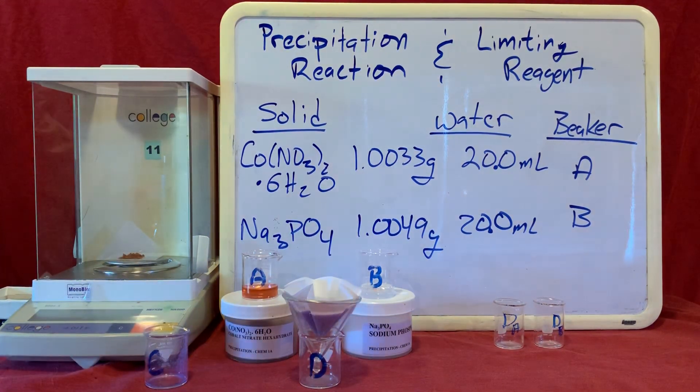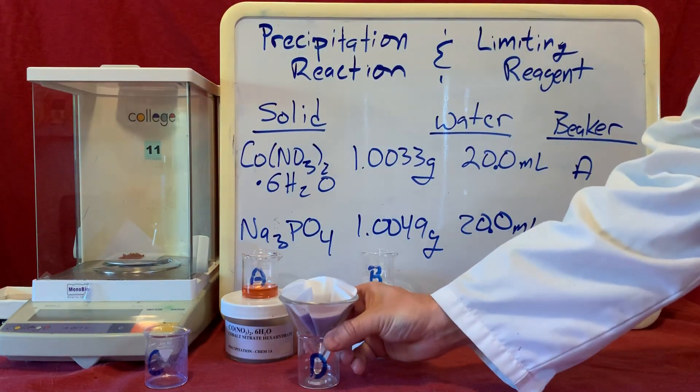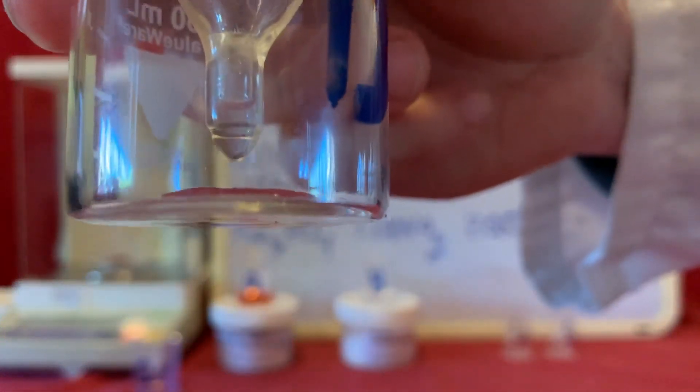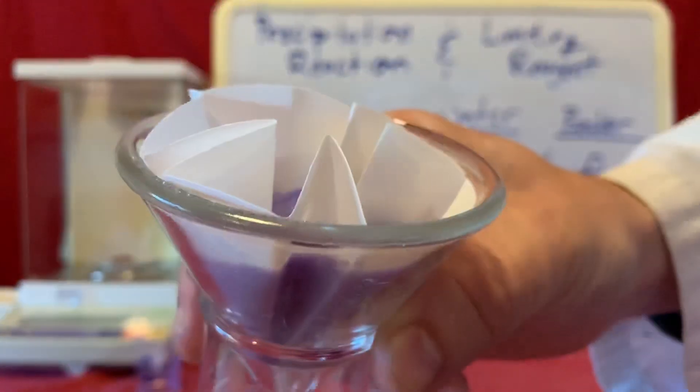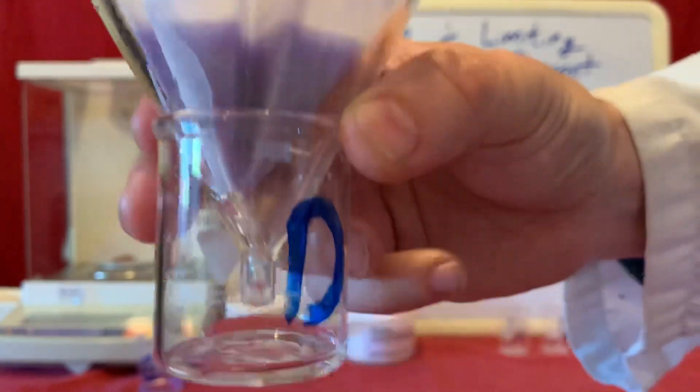So now the mixture begins to separate. This process can take some time letting all the liquid drain past the solid through the filter paper. You can see this happening down here on the bottom as the liquid slowly drains out past the filter paper. You can see it waggling around in there.